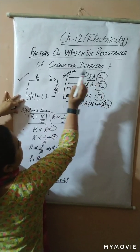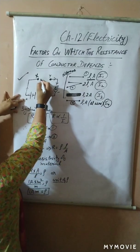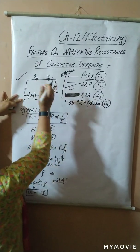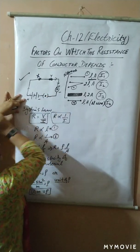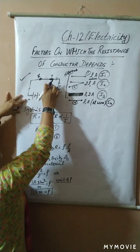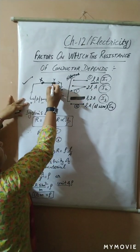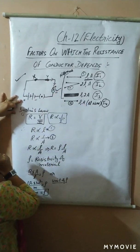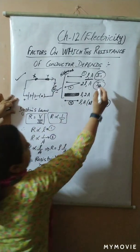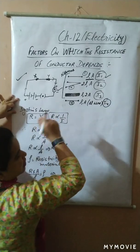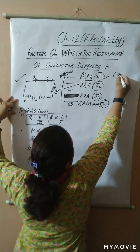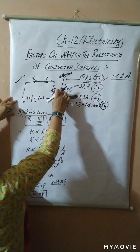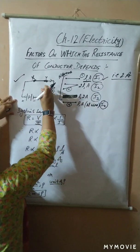We have nichrome wire pieces. The first piece has length L and area A. We connect this wire in the gap, then plug the key. Since nichrome is a conducting wire, current starts flowing and a reading comes on the ammeter. Let this reading be i1 — assume it comes to 2 amperes.